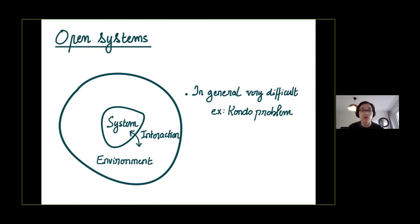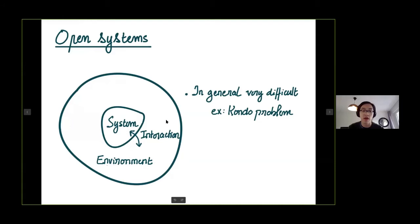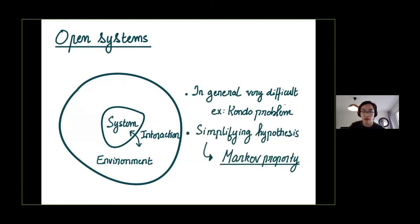For instance, this is illustrated if you take the Kondo problem. The system is just a single-body quantum system, so it's very simple. But it's put into interaction with an environment and the interaction makes it effectively a many-body interacting problem to solve. Those who have worked on the Kondo problem know that this is by all means not a trivial problem. So you want to have some kind of simplifying approximation that will allow you to go further, and a very useful simplifying hypothesis that you have in many cases is that you assume the Markov property.